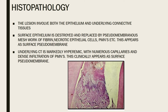Histopathologically, the lesion involves both the epithelium and the underlying connective tissue. The epithelium is destroyed and replaced by a pseudomembranous mesh-like fibrin, composed of necrotic epithelial cells and neutrophils — this appears as a surface pseudomembrane. The underlying connective tissue is hyperemic with numerous capillaries and dense infiltration of PMNs.